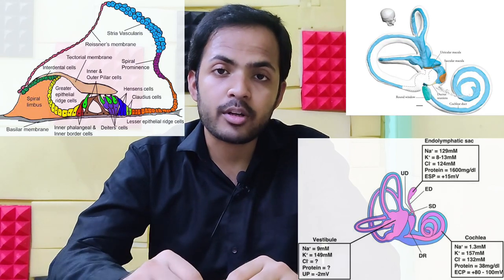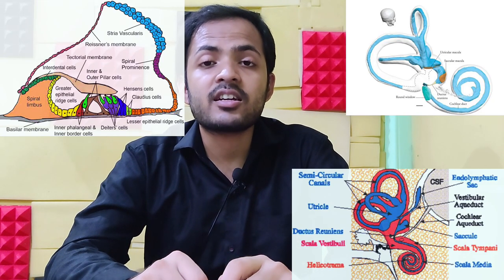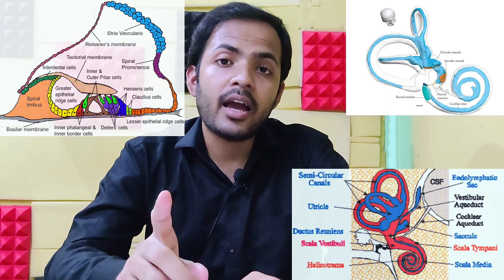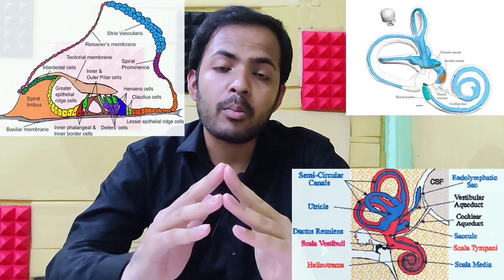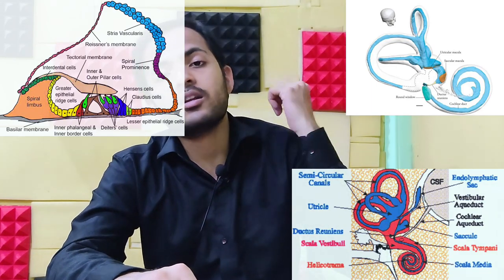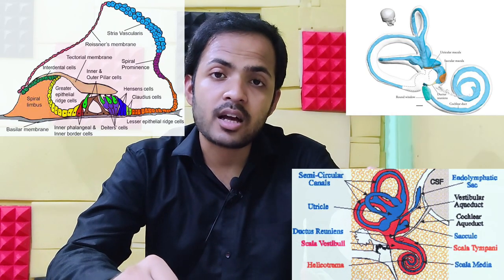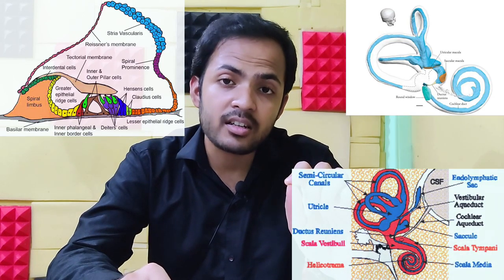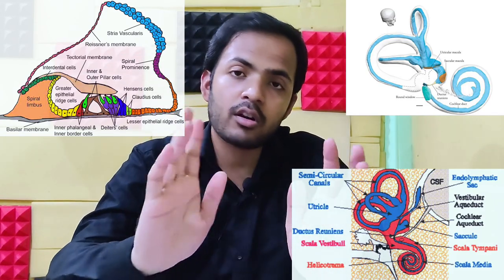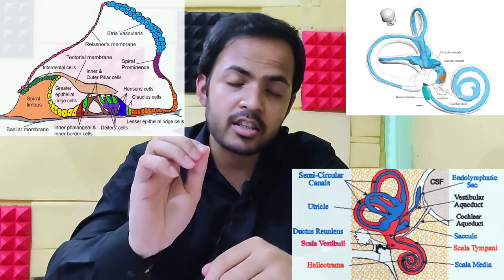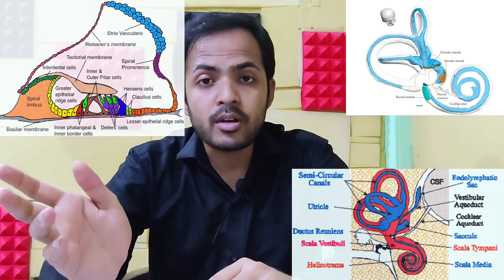Perilymph is also a special kind of fluid present inside the bony labyrinth — mainly inside the scala tympani and scala vestibuli, also called the tympanic duct and vestibular duct, which are joined at the helicotrema. This perilymph is connected with the cerebrospinal fluid and the subarachnoid space through the perilymphatic ducts. Perilymph resembles extracellular fluid and contains a high amount of sodium and very little potassium.